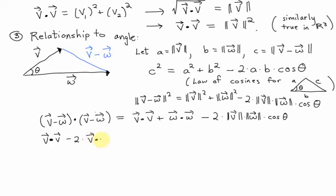I've got two terms. And after multiplying it out, I get V dot V minus 2 times V dot W plus W dot W.